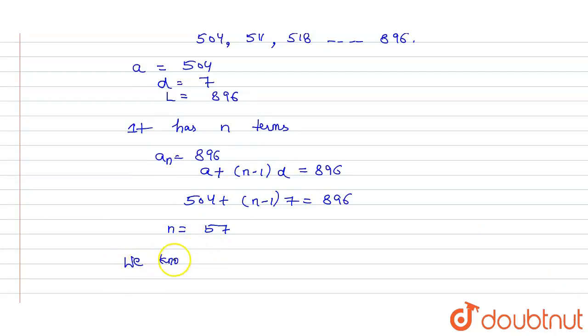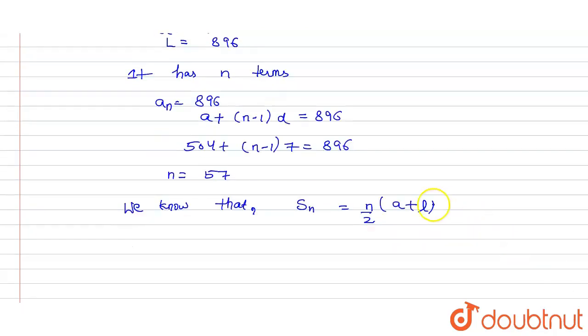Now we know that SN, that is sum of N terms, is equal to N by 2, (A plus L). A here is first term and L here is the last term.